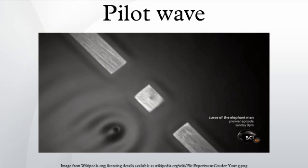In theoretical physics, the pilot wave theory was the first known example of a hidden variable theory, presented by Louis de Broglie in 1927.